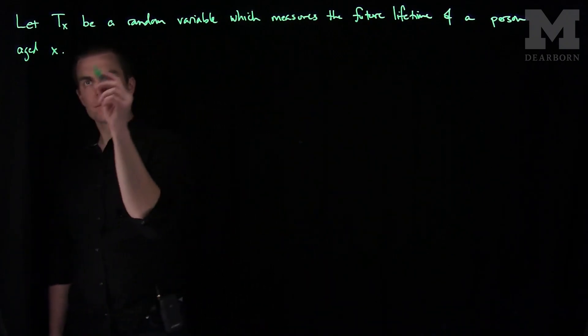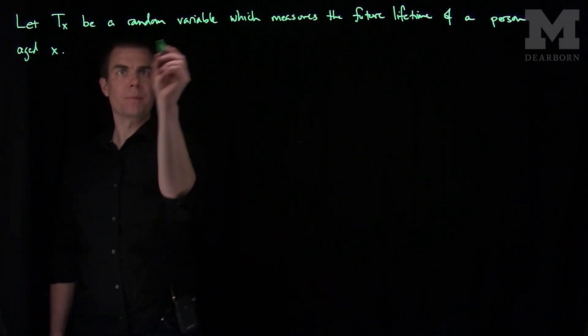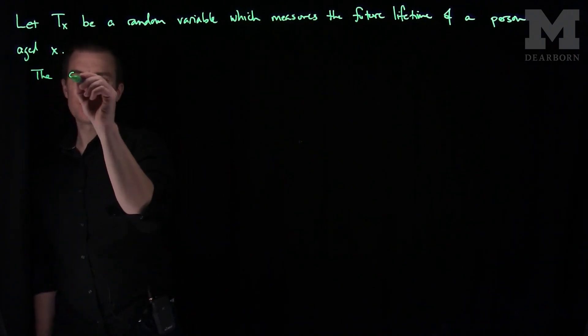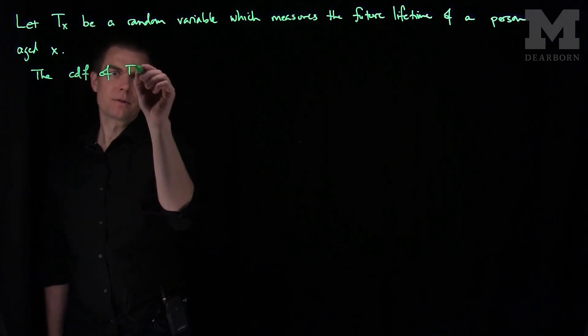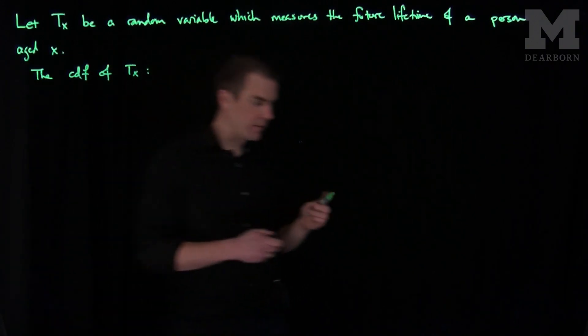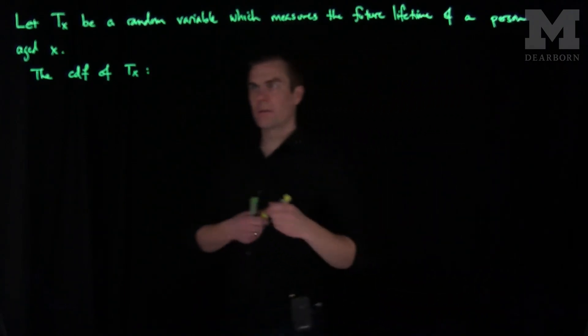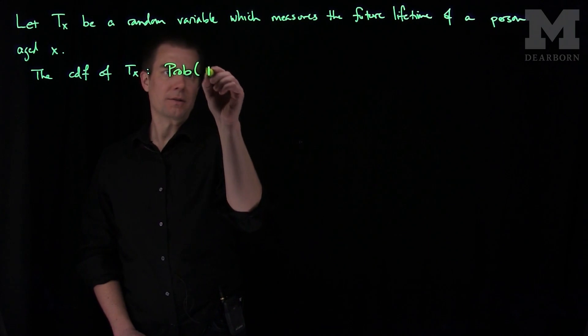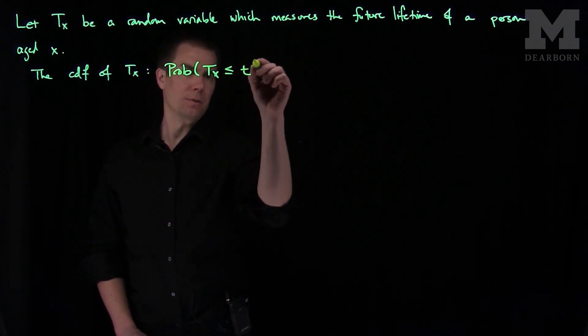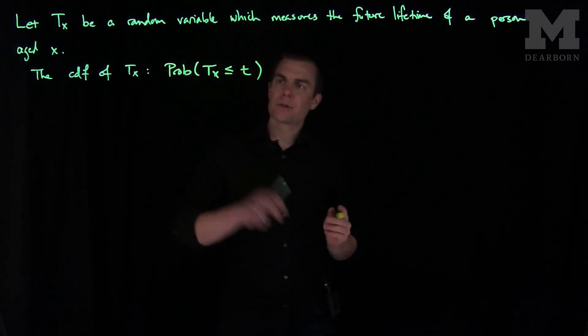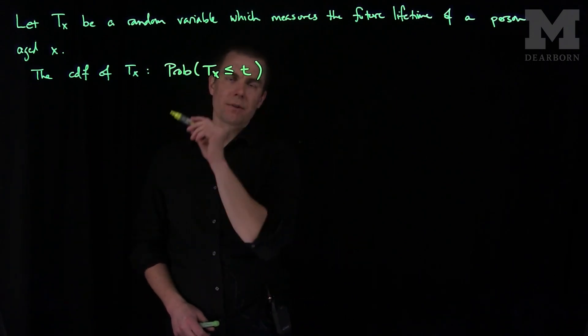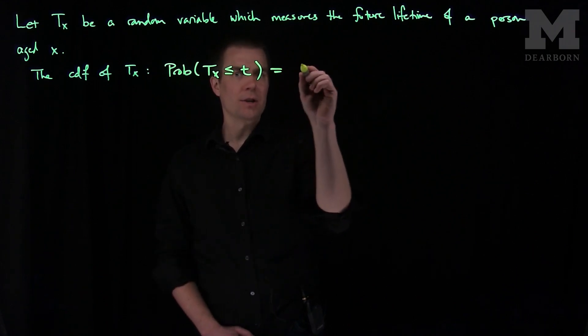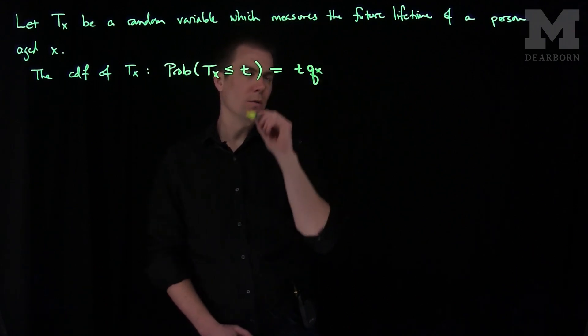Then we'll define - this is a random variable, so we have a PDF and a CDF. The CDF of T_x is given by the following formula. The CDF is the probability that T_x is less than or equal to t. This measures the probability that the person whose age is x survives no more than t years. In actuarial notation, this is denoted by tqx.